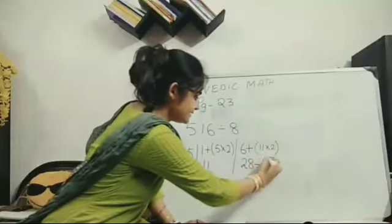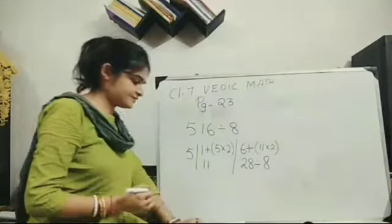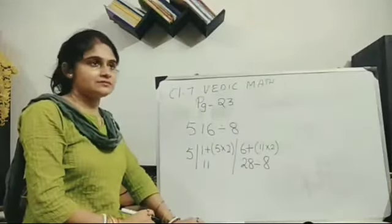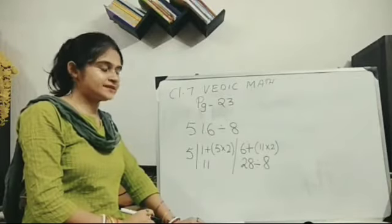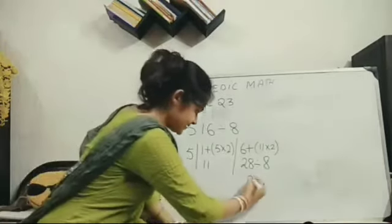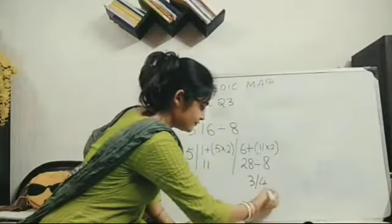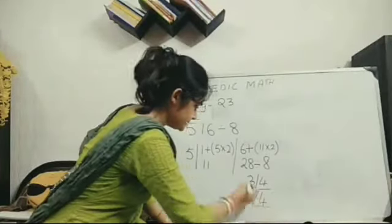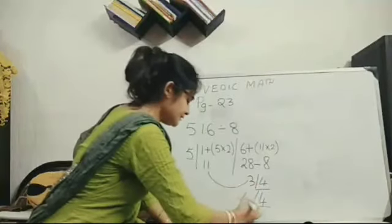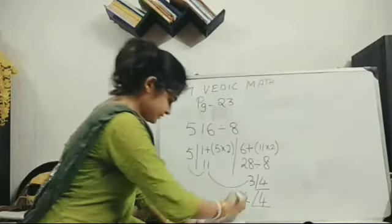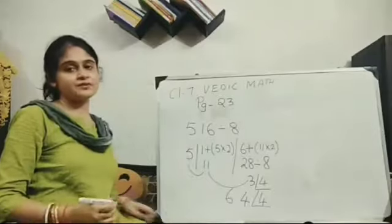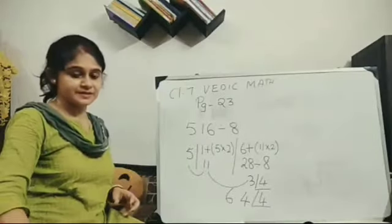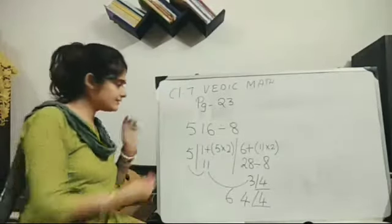Now 28 when I divide with 8, how many times it will go? 8 3s are 24. That means we will write here 3 and 4 is the remainder. So 4 will come down when we balance. And this will move here. Again 4 will come down. This will go here. 64 is my quotient. 4 is my remainder. And the last one.